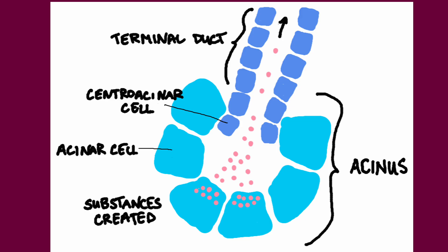This is the most basic structure of an exocrine gland. There are acinar cells that make the essential substances and transfer them into the ductal system that is lined with cuboidal epithelial cells that ultimately send the product onto the surface. The grouping of cells that make the substances and send them into the ducts are called acinus.